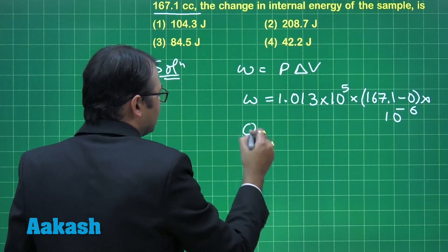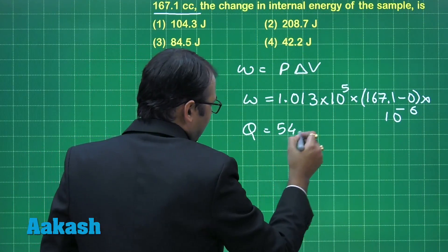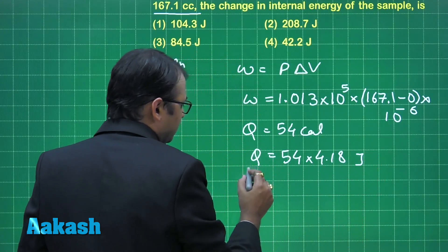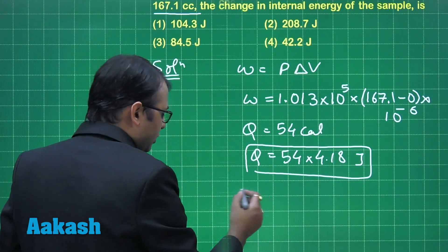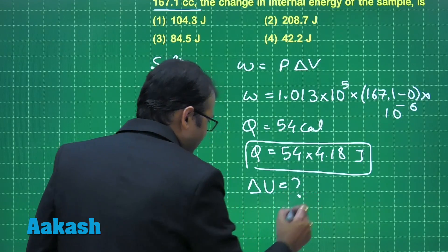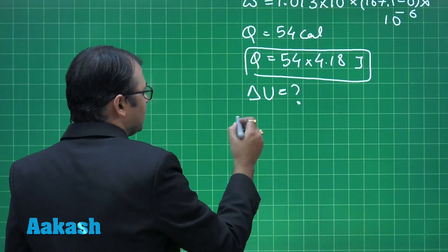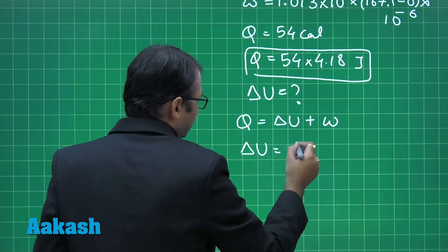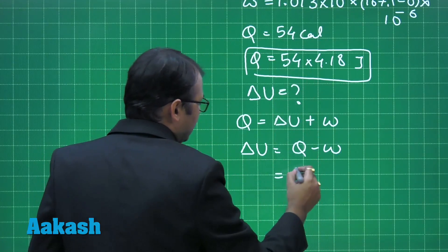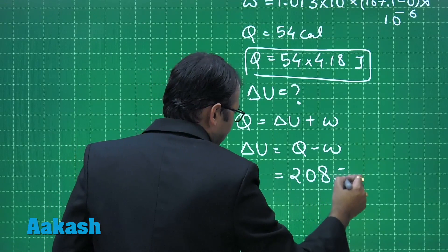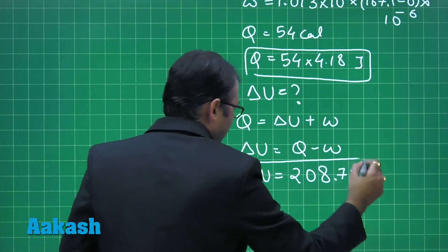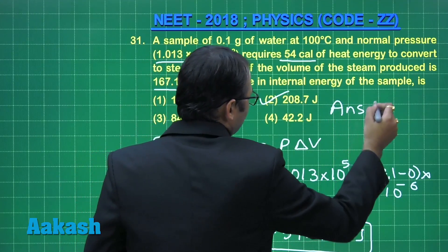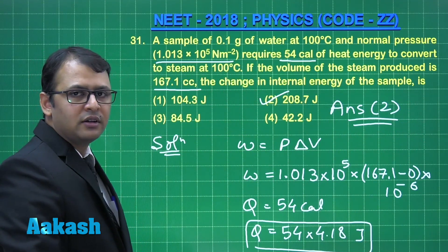The heat given to the system is 54 calories. Converting to joules: 54 × 4.18. We have the heat and the work done. Using the first law of thermodynamics, Q = ΔU + W, so ΔU = Q − W. Substituting the values, ΔU comes out to 208.79 joules. The correct answer is option 2.